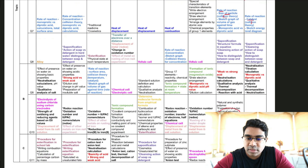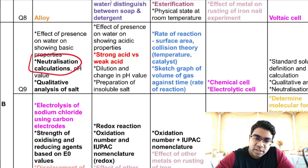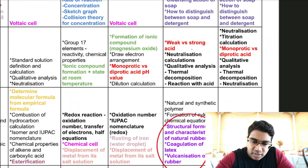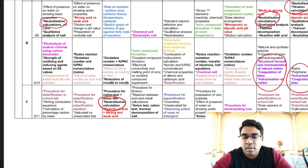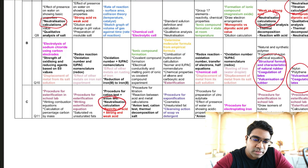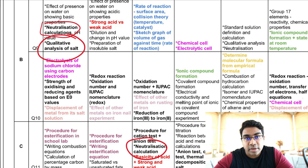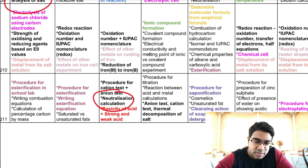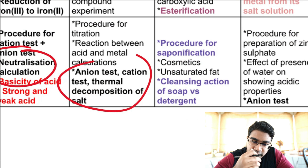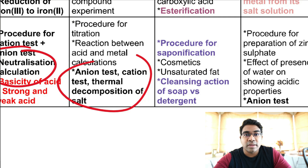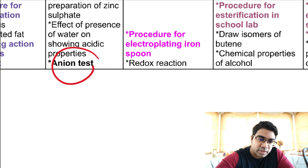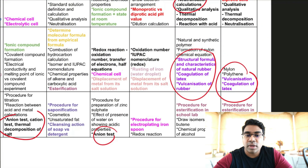Other common topics include neutralization — neutralization calculation seems to be recurring as well. Qualitative analysis is something you really cannot run away from. You can see anion test, cation test, and thermal decomposition — at least these two you must be familiar with. If you go through the chemistry colors revision videos, those short videos explain how to identify things from colors in chemistry. Anion test and cation test can be slotted into many topics, so you can't run away from them.